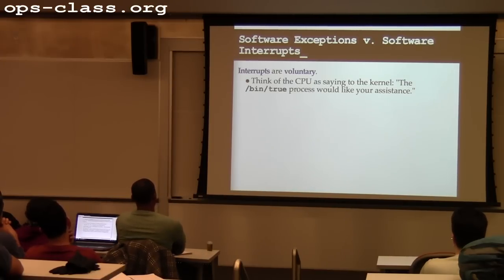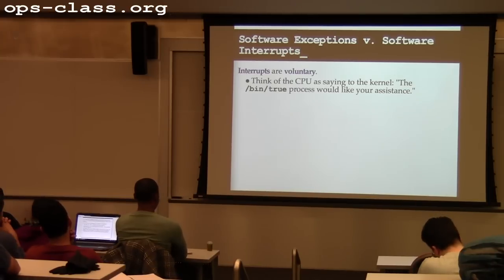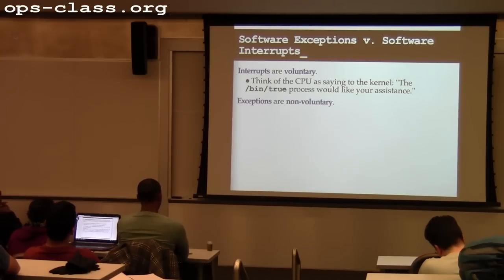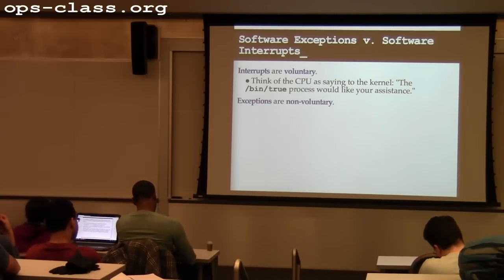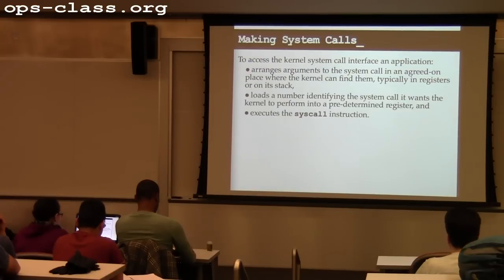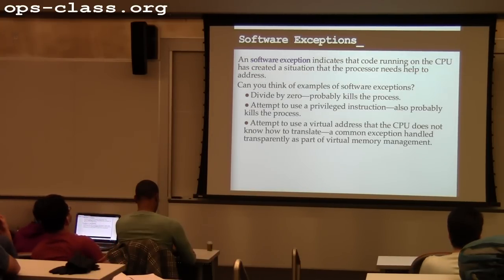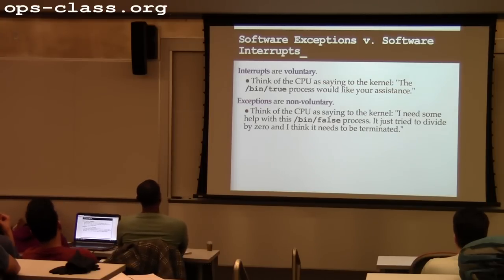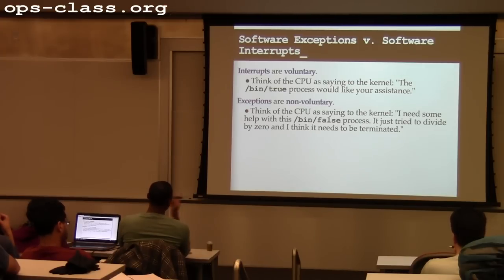The difference between interrupts and exceptions: software interrupts are voluntary — the software knows the kernel is about to run because it asked for help, like trying to open a file. Exceptions are non-voluntary — the kernel starts running because the system trapped, but the software didn't necessarily expect it to happen. Not every software exception will cause the process to be killed; some are handled transparently by the kernel, which is used for memory protection. But many will cause process termination.